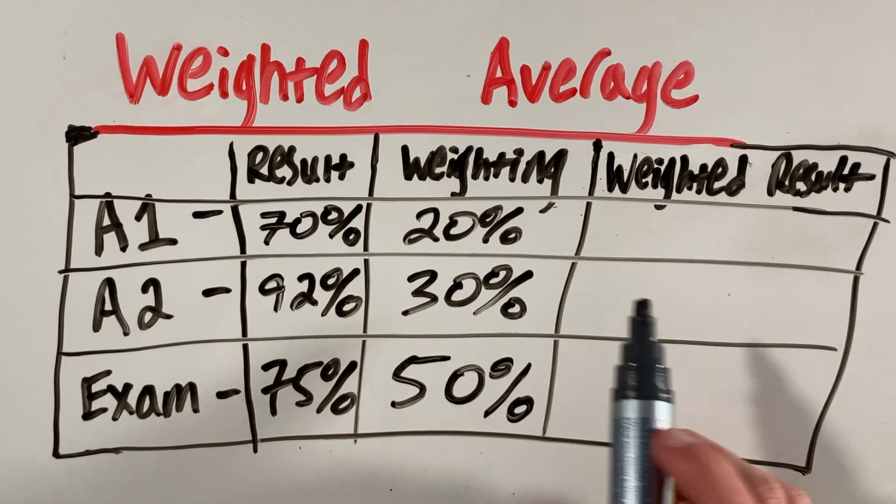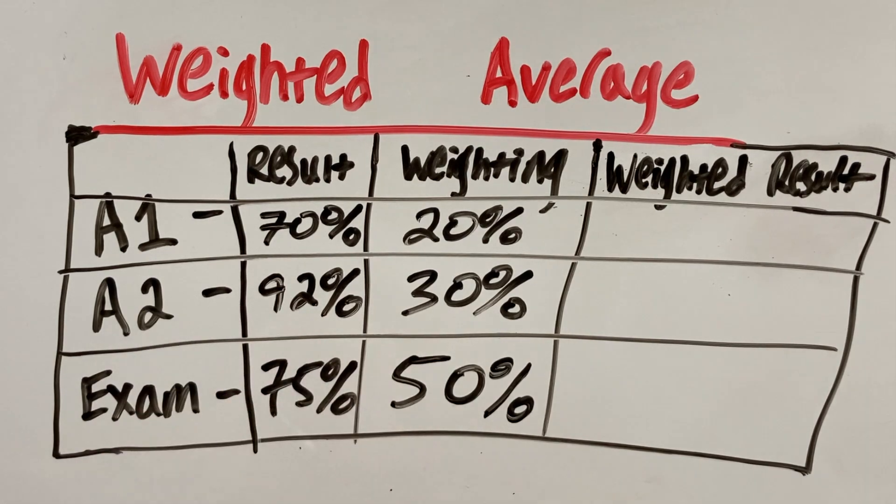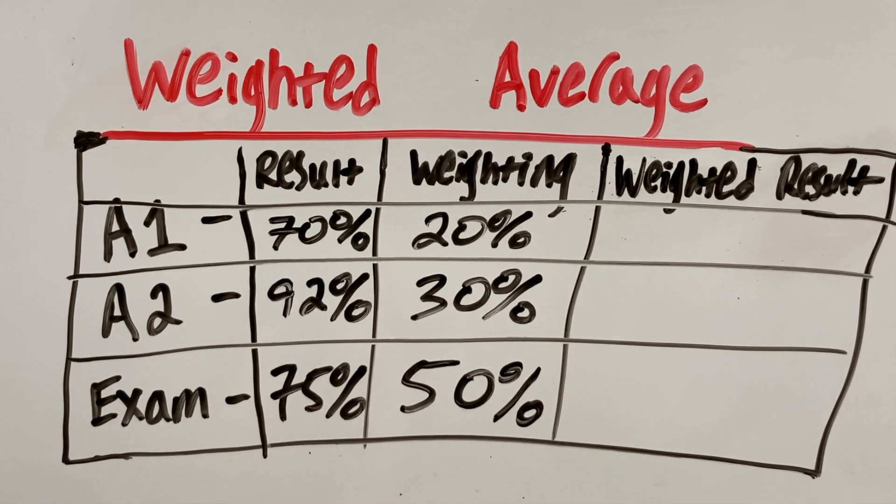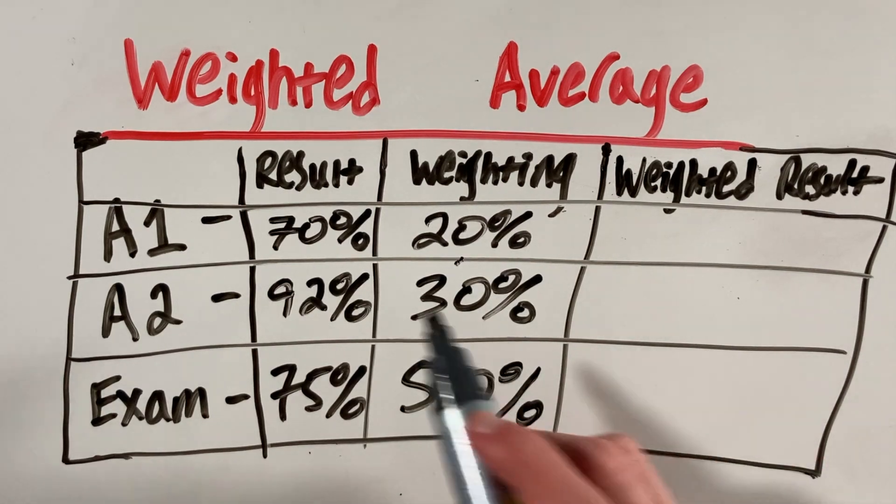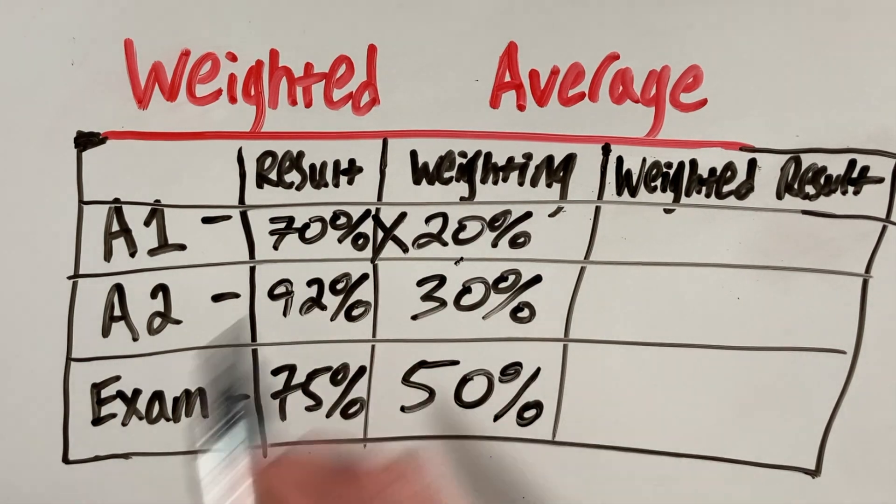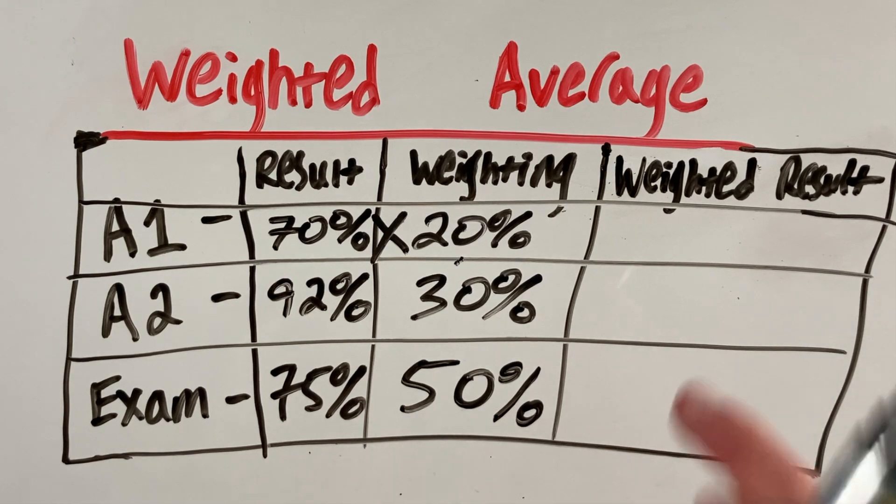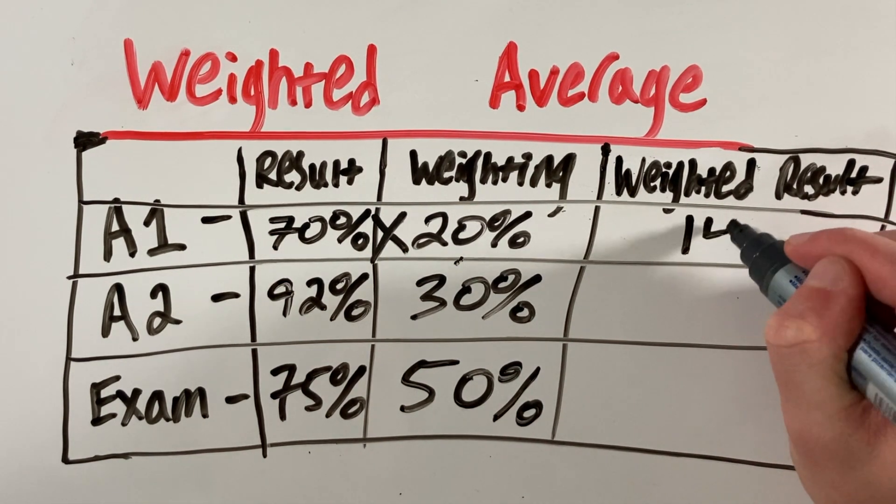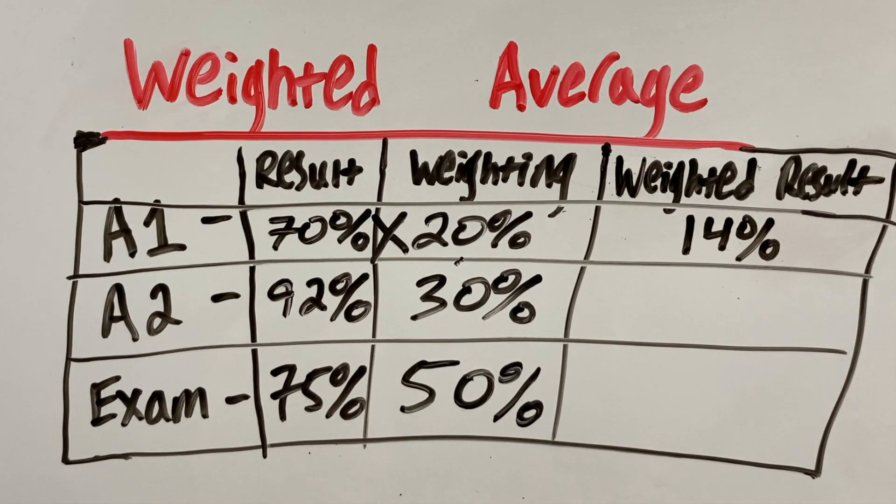Let's start with calculating the weighted result for assignment 1. For our first assignment, we have 70%. To get the weighted result, we do 70% times 20%. In other words, we have 70, which is our result, and we multiply that by 0.2 or 20%, which gives us 14%.